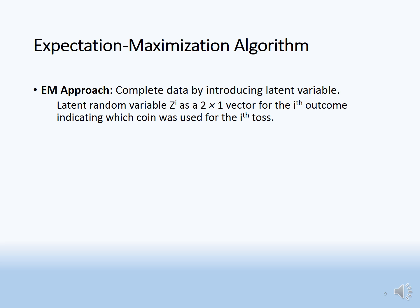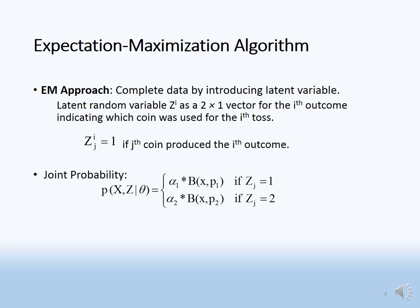For the i-th outcome, the latent variable z_ji equals one if the j-th coin produced the i-th outcome. Joint probability: P(x, z given theta) = alpha1 times Bernoulli(x, p1) — where Bernoulli(x, p1) is success raised to power number of successes times failure raised to power number of failures — or alpha2 times Bernoulli(x, p2) if z_j equals two, meaning the outcome is from coin two.